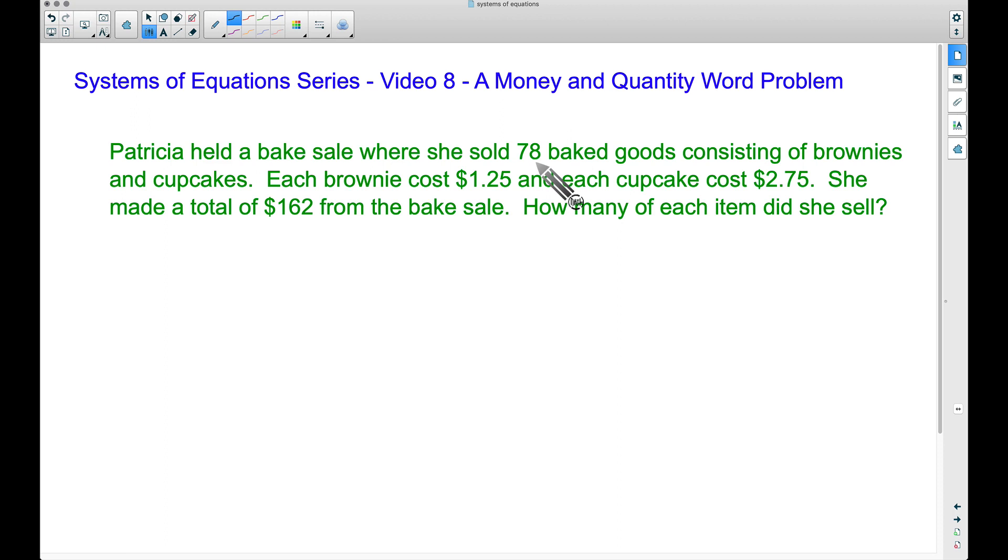Patricia held a bake sale where she sold 78 baked goods consisting of brownies and cupcakes. Each brownie cost $1.25 and each cupcake cost $2.75. She made a total of $162 from the bake sale. How many of each item did she sell?